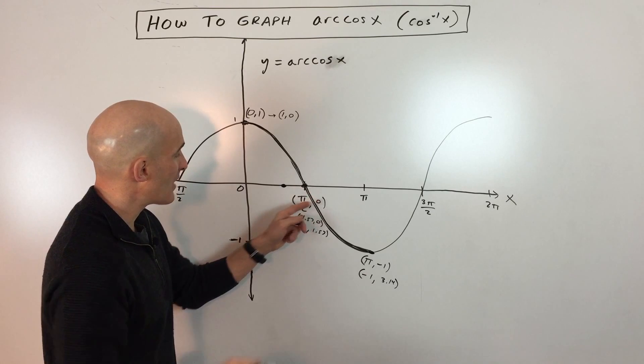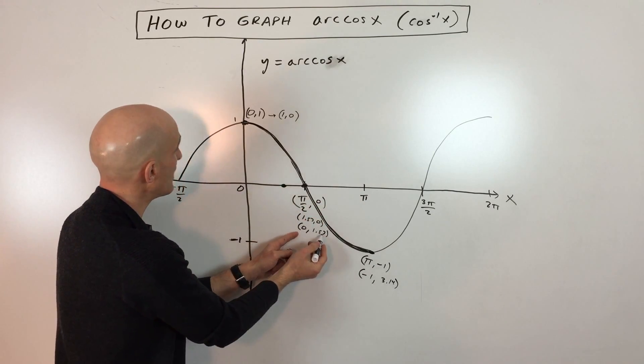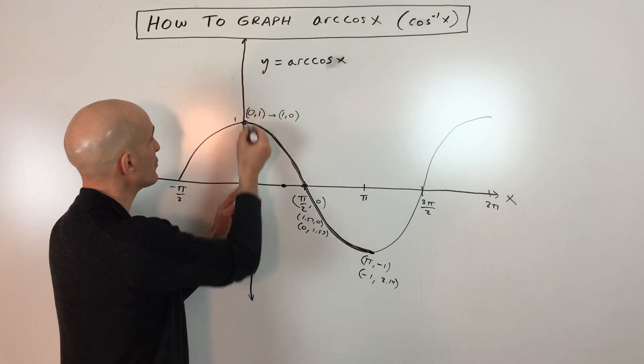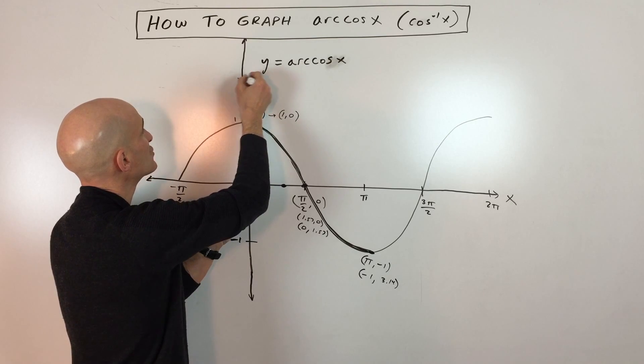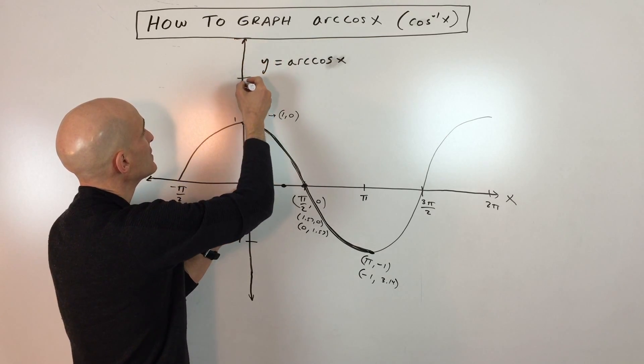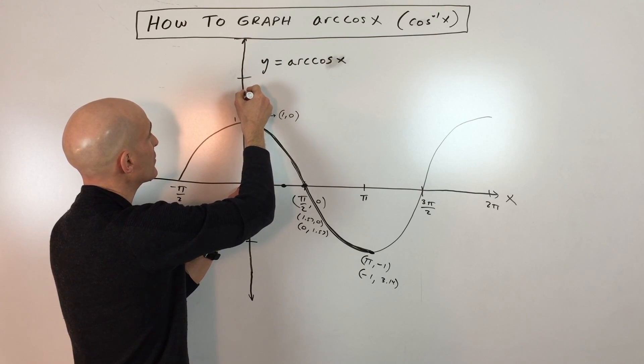Now this point here, pi over two comma zero, when we interchange those, we get zero comma 1.57. So that's going to be zero. 1.57, it's going to be right about, let's see here, let's make this two, make this about three. So 1.57 would be right about here.